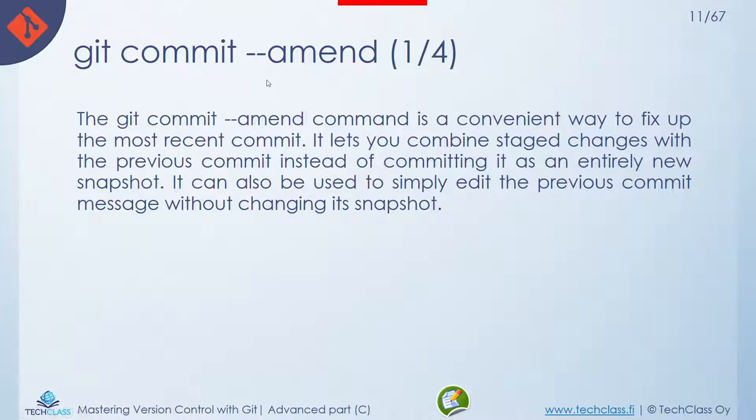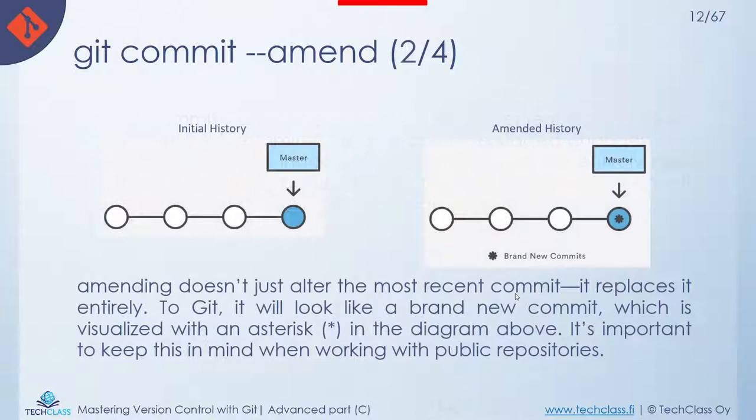The first command is git commit --amend. When you have already made your most recent commit, there is a way to modify things about it using git commit --amend. It's not going to go back way before — it just goes back to your last and most recent commit.